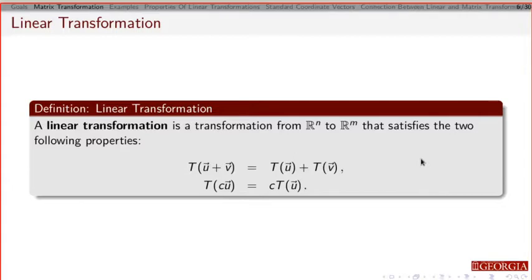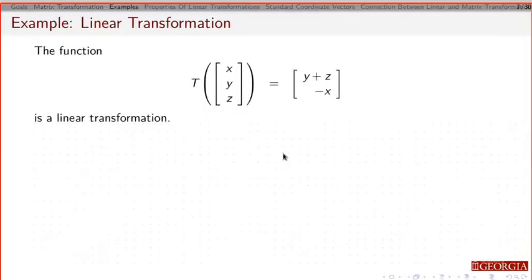We're going to take that idea and generalize it. We're going to define something called a linear transformation. A linear transformation takes a vector in R^n and returns a vector in R^m, and it satisfies two things. First, T acting on u plus v is the same as T acting on u plus T acting on v. Also, if c is a scalar, you can pull that out and do that multiplication afterwards. So if I give you some operation or function and ask you to show it's a linear transformation, you have to show that both of those two things are true. If any one of those is not true, it is not a linear transformation.